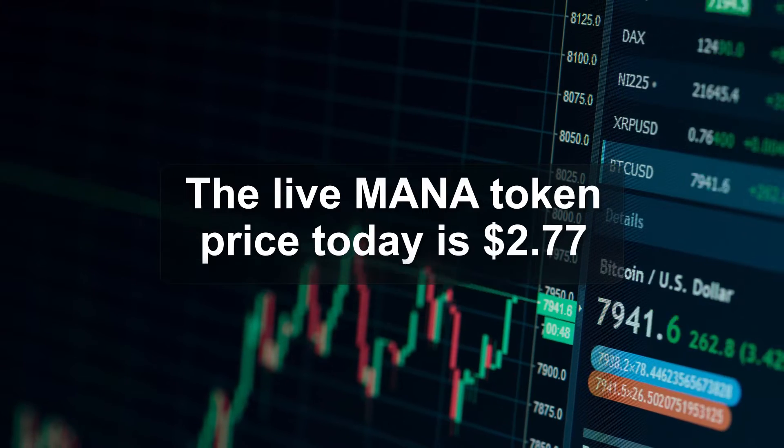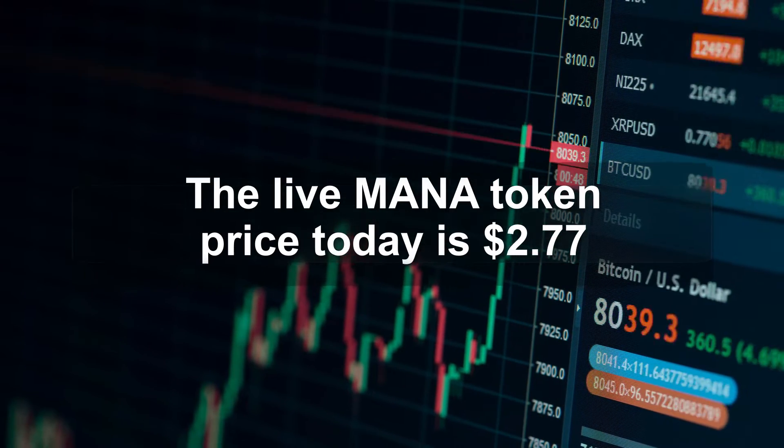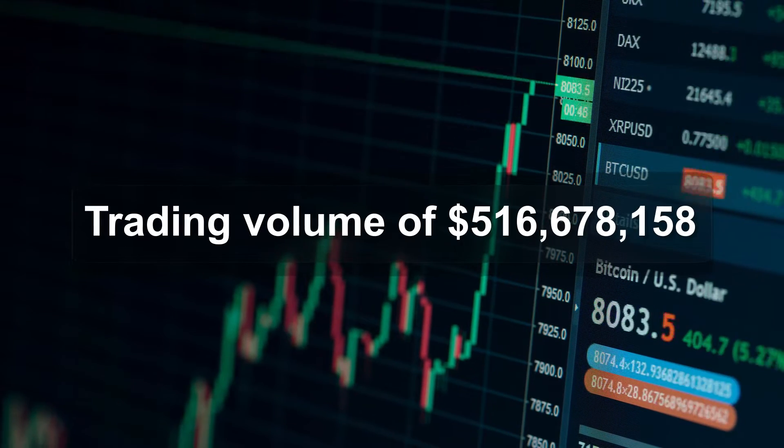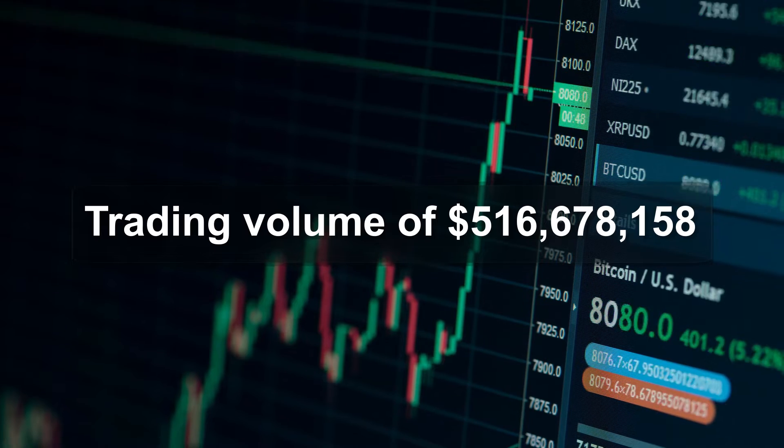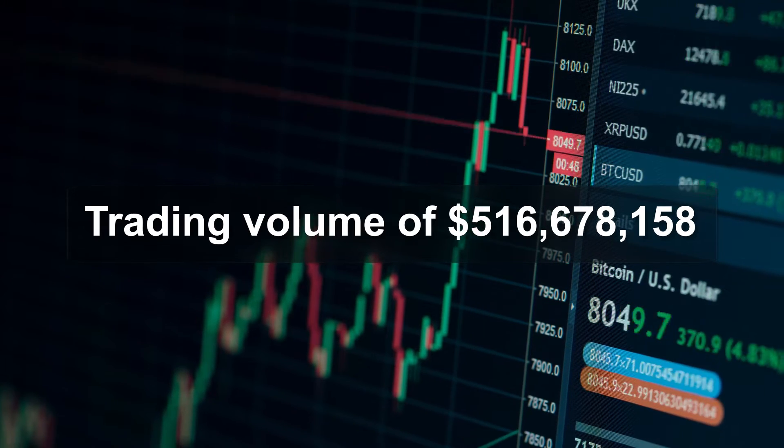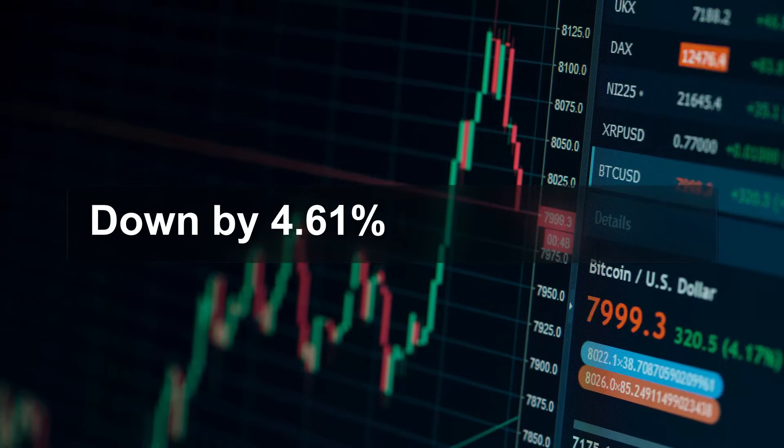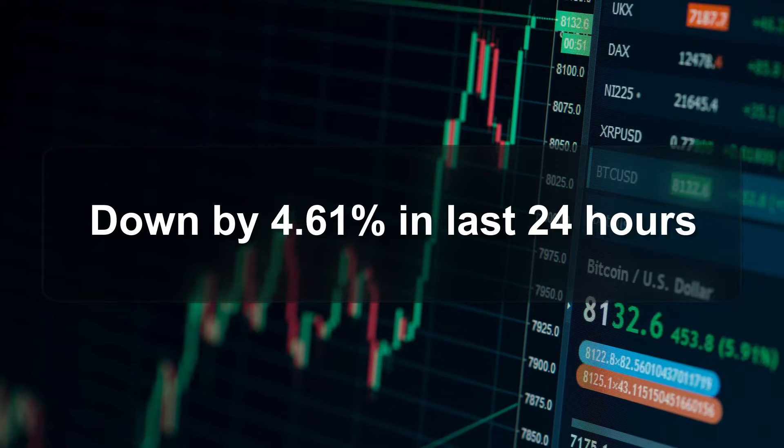The live Mono token price today is $2.77 with an intraday trading volume of $516,678,158. The coin price is down by 4.61% in the last 24 hours.